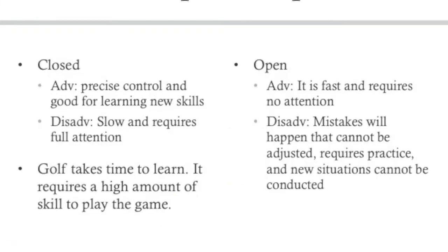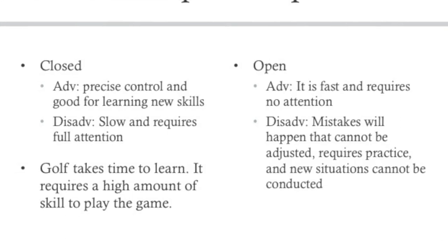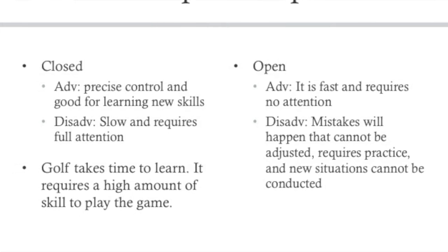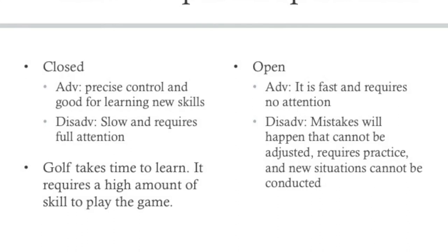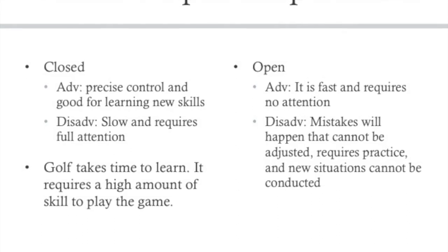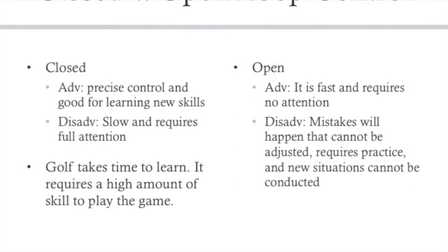Closed and open loops of control can both benefit and become a detriment to a golfer's swing and their weight transfer distribution. In closed loop controls, the advantage is precise control and learning new skills. The disadvantage is that it is slow and requires full attention.